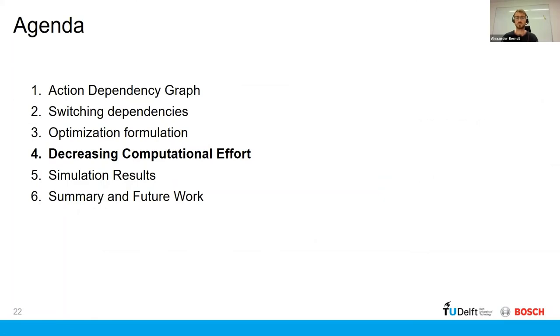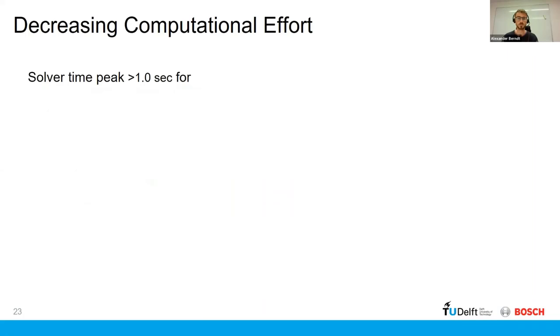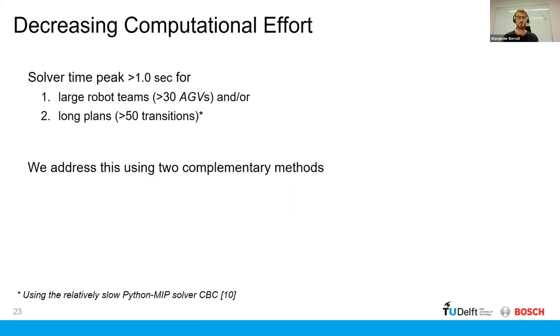So just to give just a rough indication of the numbers, we had a solver peak time more than one second if the number of AGVs was larger than 30 and the plans were relatively long. And we introduced two methods in the paper that significantly reduced this computation time, which is switching dependencies within a horizon and then dependency grouping.